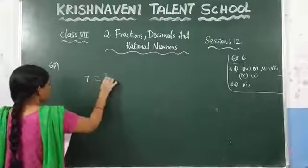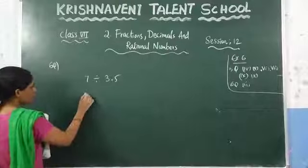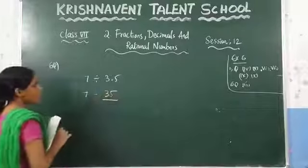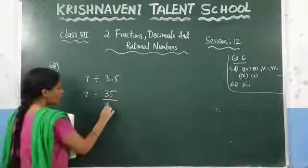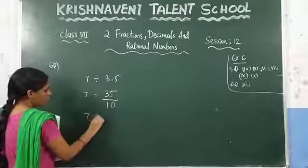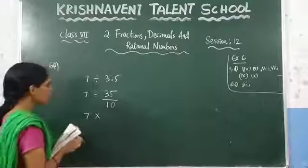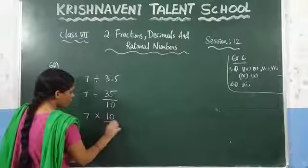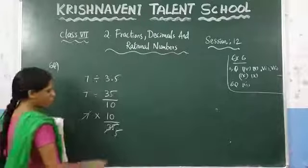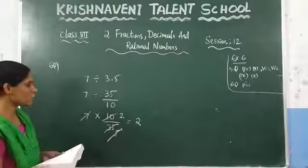The next question is 7 divided by 3.5. Write 3.5 as 35 by 10, since after the decimal point one number is there. Change division into multiplication, so write the reciprocal: 10 by 35. Then 7 into 10 divided by 35 — 7 cancels with 35 giving 5, and after simplification you get the answer 2.